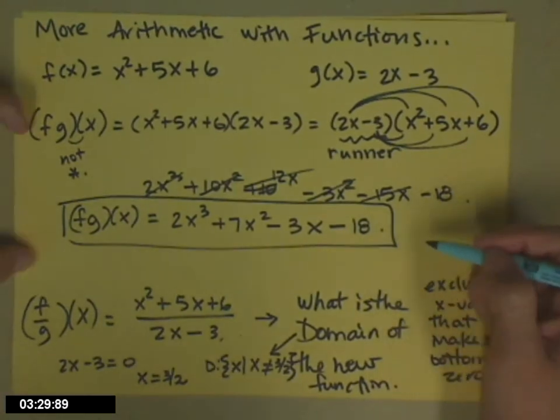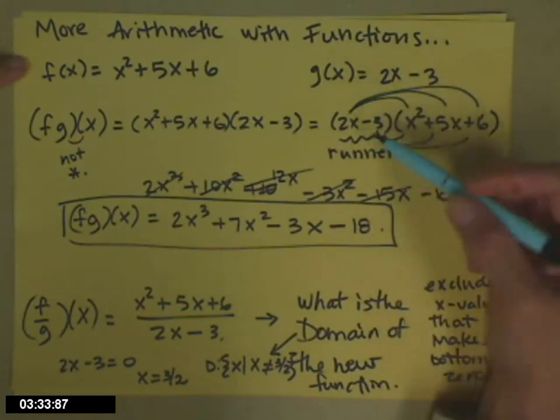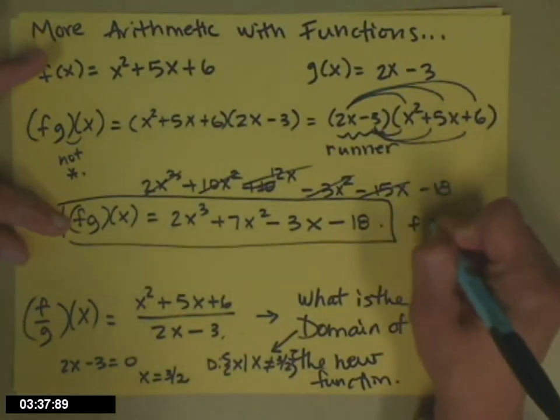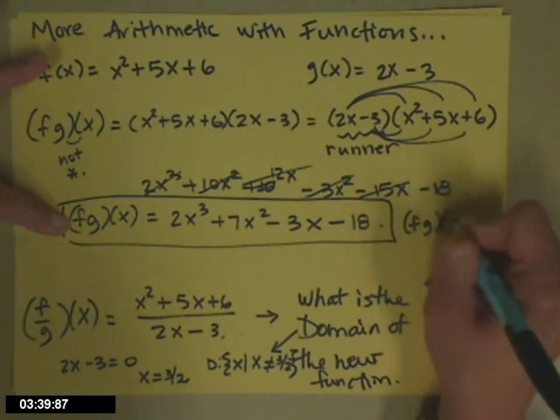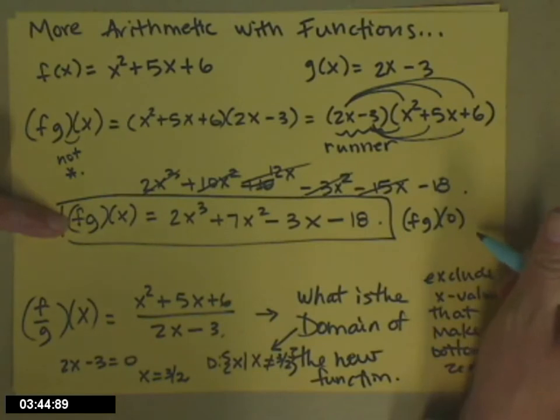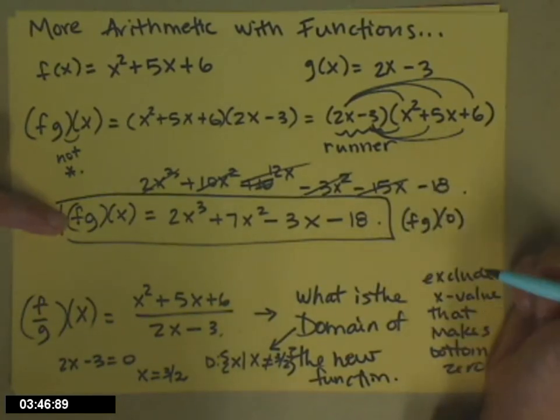Back up here to the multiplication problem. Often what I will do is I won't actually ask you to find f times g of x. Instead, I'll ask, what is f times g of 0? Because we can find this pretty cleverly without multiplying everything together.